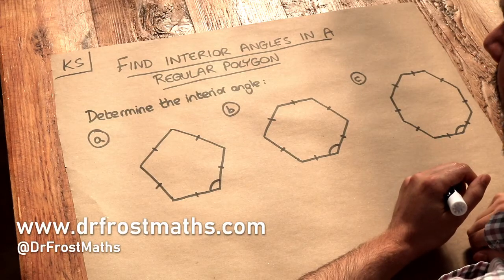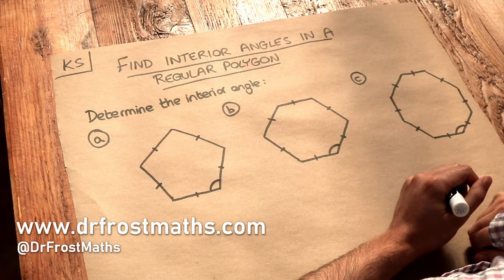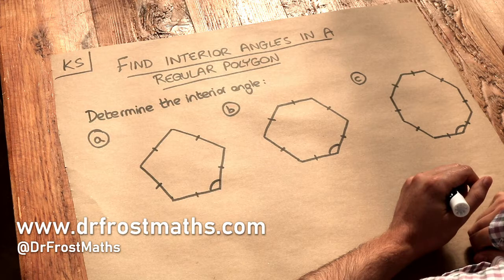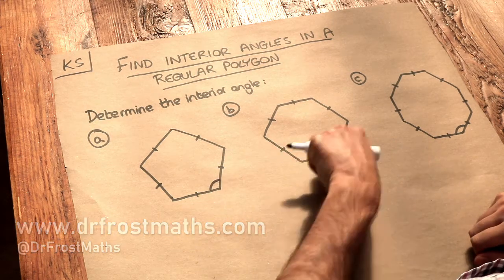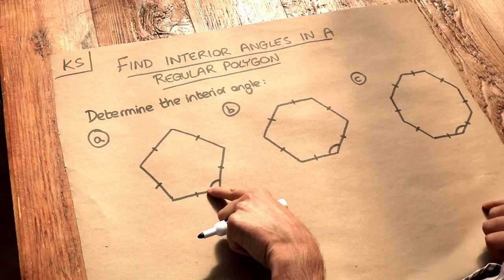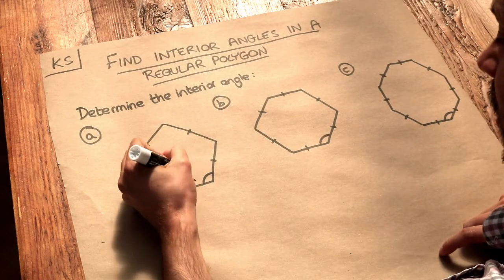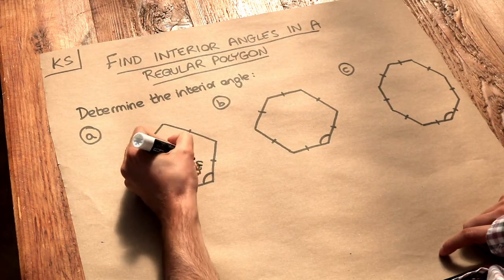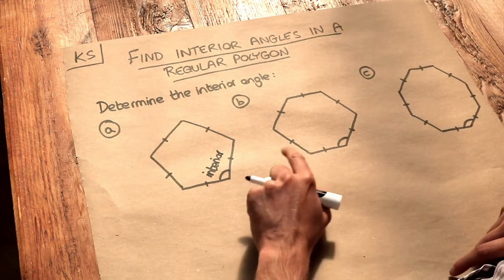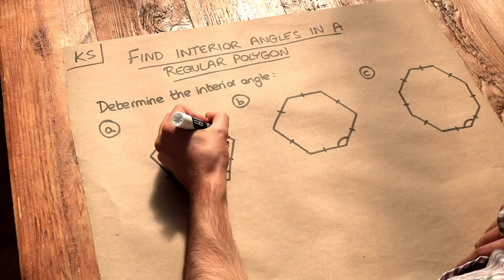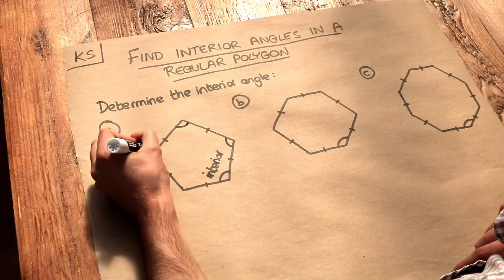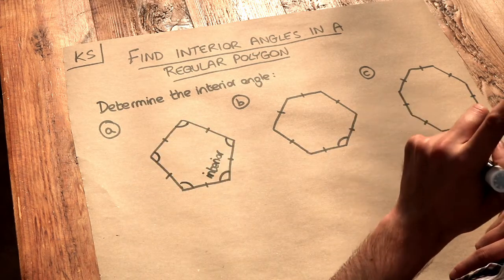Hello and welcome to this Dr Ross Maths key skill video on finding interior angles in a regular polygon. We've got these three polygons here and we want to find the interior angle, which is just the angle inside the shape. Because this is a regular polygon, all these interior angles are going to be the same, just like all the lengths of the sides are going to be the same.